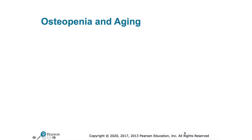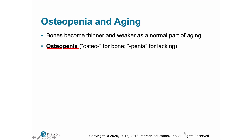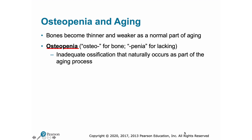Aging affects all of the tissues of the body, and bone tissue is no exception. Bones become thinner and relatively weaker as a normal part of aging. Inadequate ossification is called osteopenia — 'osteon' from the Greek for bone, and 'penia' for lacking or low amounts. This suffix appears in terms such as thrombopenia (low platelet count) and leukopenia (low white blood cell count). All of us become slightly osteopenic as we age, with bone mass reduction beginning between the ages of 30 and 40.